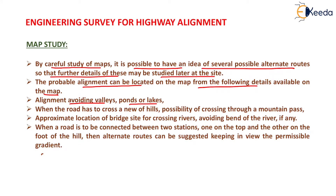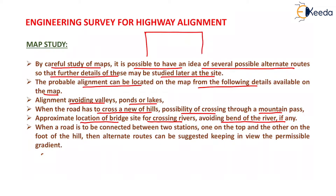When the road has to cross a series of hills, the possibility of crossing through a mountain pass, the approximate location of bridge sites for crossing rivers, and avoiding bends of the river if any. Generally we have the topographic map of a particular area where we are going to finalize our alignment.